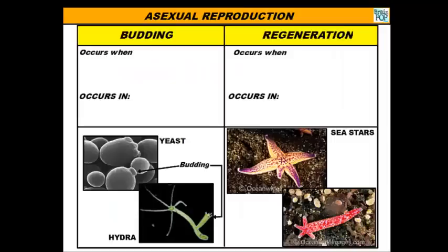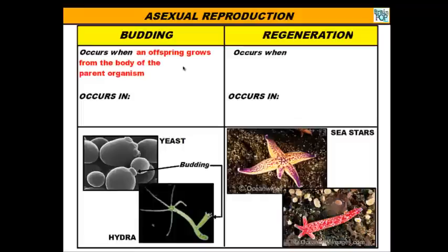Organisms made of more than one cell can also undergo asexual reproduction. One way is called budding, which occurs when the offspring grows from the body of the parent organism. To put it into context, imagine a miniature version of you started growing on your shoulder — looking exactly like you, just one-tenth the size — and eventually separated from your body and matured into an adult. That's what happens in organisms like yeast and hydra.